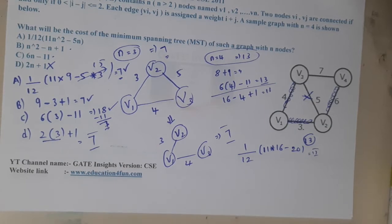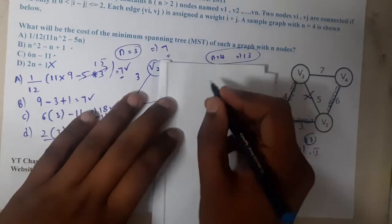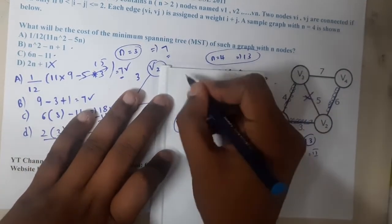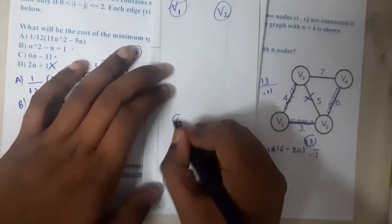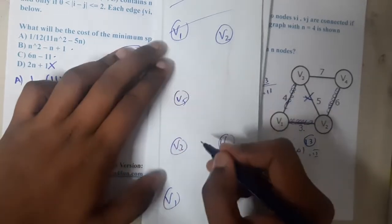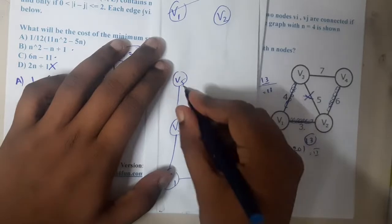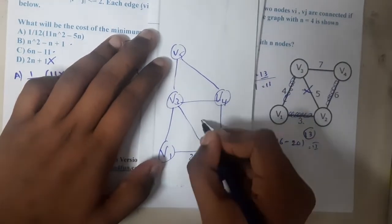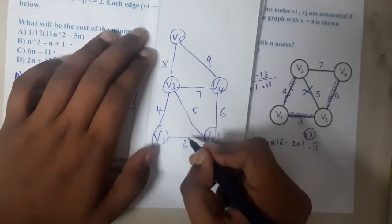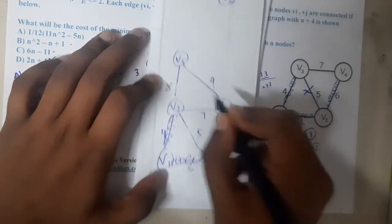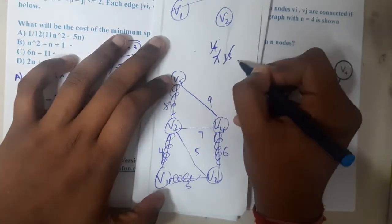Now let us try n equal to 5 with nodes v1 through v5. Drawing the graph, adjacent nodes (distance 1 or 2) are connected. The edges and their costs include: v1-v2 cost 3, v1-v3 cost 4, v2-v3 cost 5, v2-v4 cost 6, v3-v4 cost 7, v3-v5 cost 8, v4-v5 cost 9, and so on. For the MST we select edges with costs 3, 4, 6, and 8.